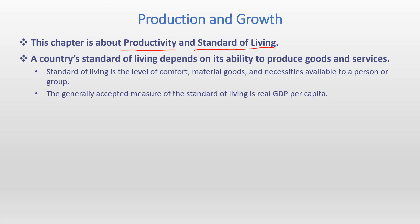Standard of living is the level of comfort, material goods, and necessities available to a person or group. This simply means your living standards — how comfortable you are, how many goods and services you have, whether you have food, clothes, a house, or a car. If you have food, shelter, clothes, a car, and a house, your standard of living is relatively good. If you don't have these things, your standard of living is poor.